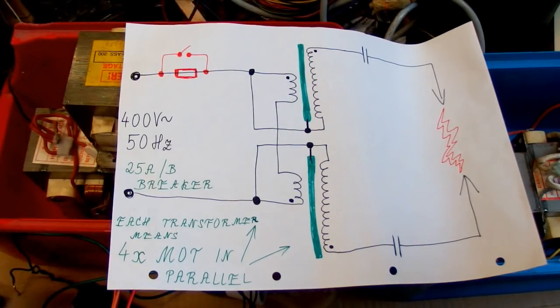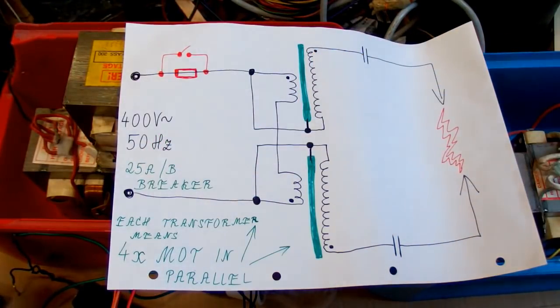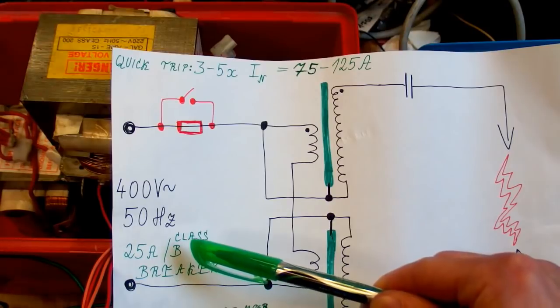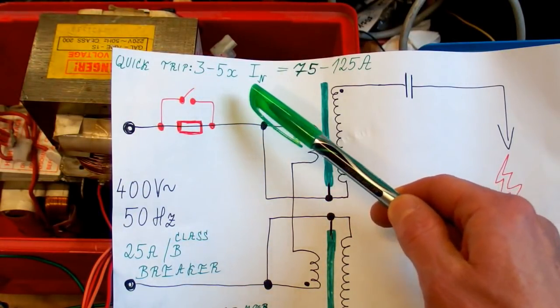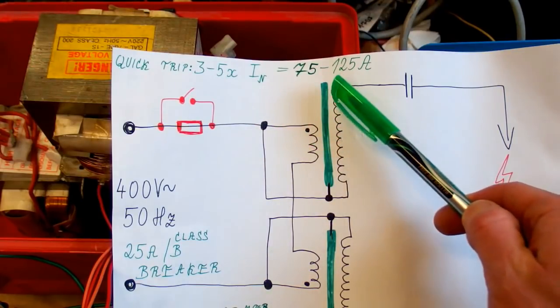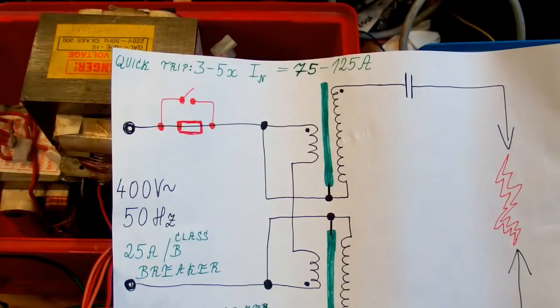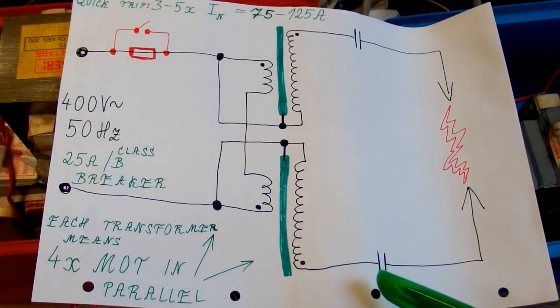Now the question is, can I turn it on without tripping my 25 amps B breaker? It's a class B breaker, which means its magnetic or fast tripping threshold is 3 times to 5 times the nominal current, which is about 75 to 125 amps for this breaker. At a lower current it trips with a delay using the slow thermal mechanism with a bimetal. And the second question is, how many capacitors I can put in parallel without tripping my breaker?